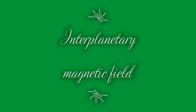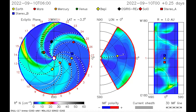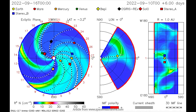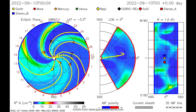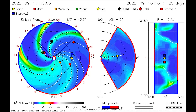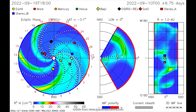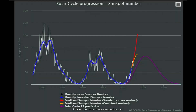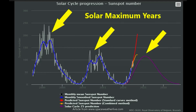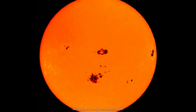The interplanetary magnetic field plays a huge role in how the solar wind interacts with Earth's magnetosphere. In this article we will learn what the interplanetary magnetic field is and how it affects auroral activity here on Earth. Around solar maximum, when the Sun reaches her maximum activity, many sunspots are visible on the visible solar disk.